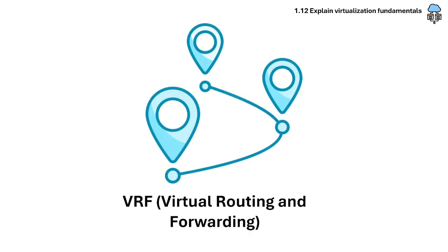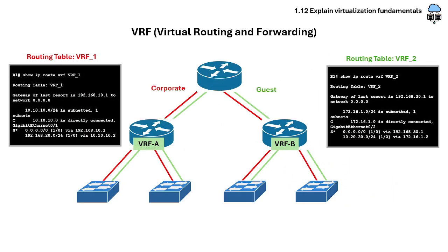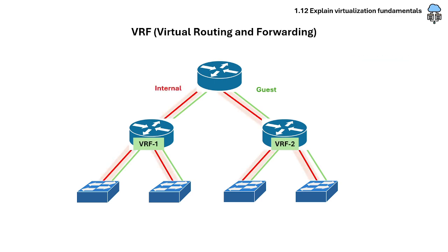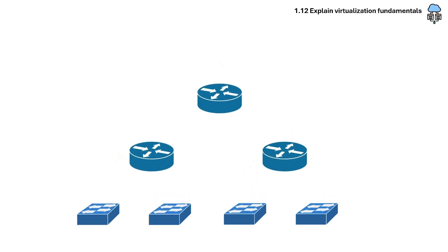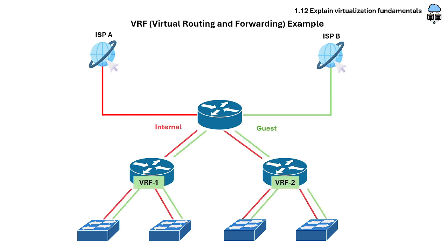The last topic in this section is VRF, or virtual routing and forwarding. VRF is a layer 3 virtualization feature on routers that allows multiple separate routing tables to coexist on the same physical router. Each VRF instance operates like a logical router, completely isolated from other VRFs, even on the same physical device. For example, with two internet connections — one for guest users and one for corporate users — each has its own path to the internet despite sharing common hardware. VRFs allow segmentation of each user's traffic and secure routing without interference, even when they use the same subnet.